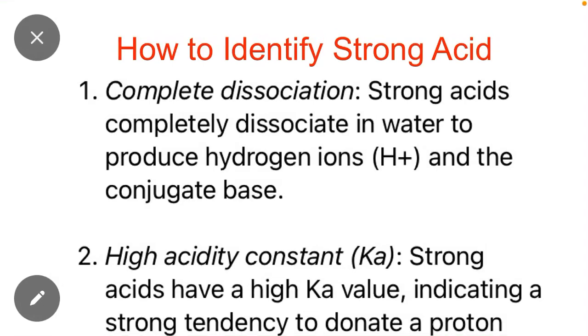Chemistry Academy students, in this video we will study how to identify a strong acid. There are just five points to keep in mind to identify a strong acid. The first point is complete dissociation. Strong acids completely dissociate in water to produce hydrogen ions H+ and the conjugate base.